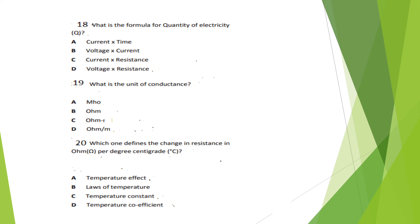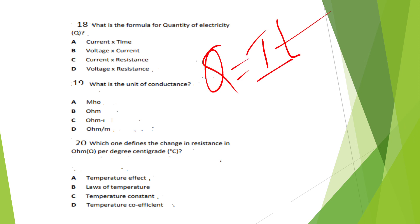Question 16: What is the formula for the quantity of electricity? Q = I × T, Option A. Question 17: What is the unit of conductance? The conductance unit is Mho.